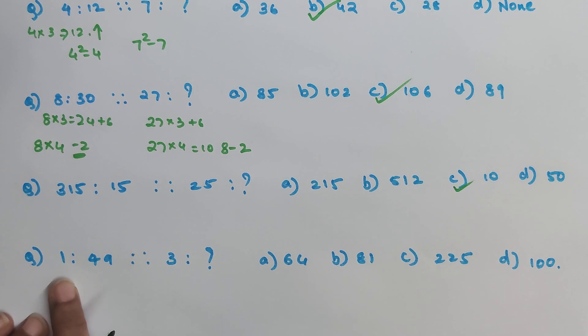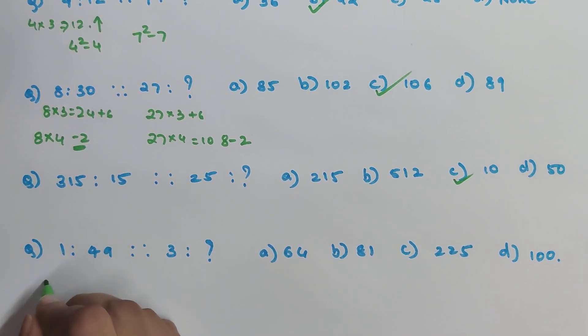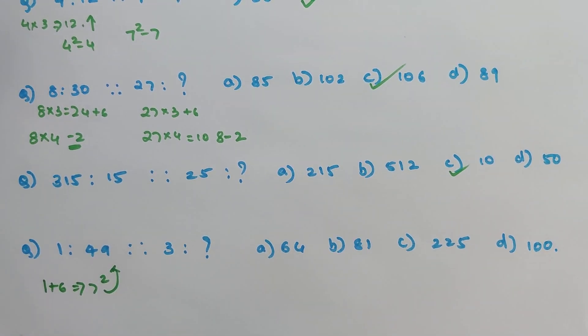Now the last one, the last one looks a bit tricky but trust me it's very very easy. So 1 is to 49, so 1, can I say 1 plus 6 gets me 7 and 7 square is getting you 49.